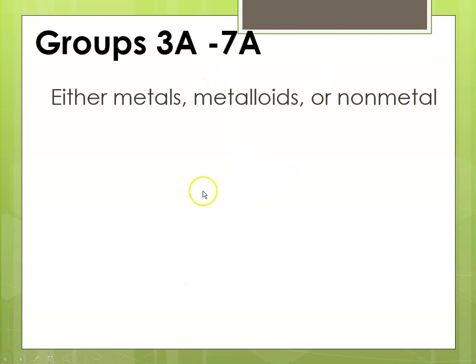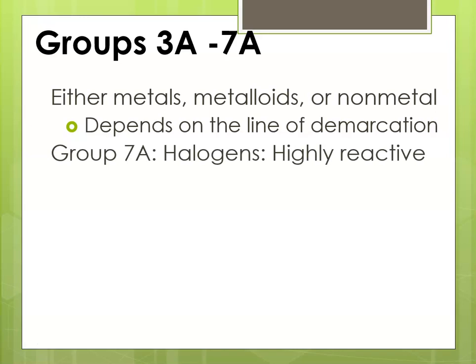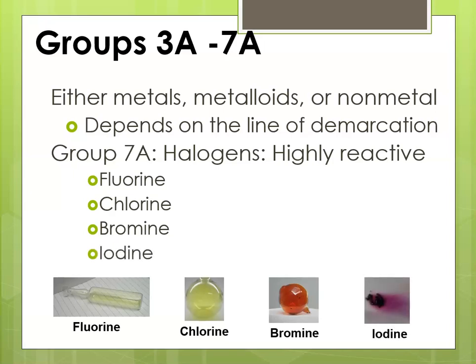Now groups 3A through 7A. We're talking about the representatives again, the tall guys on the periodic table. They are either going to be metals, metalloids, or nonmetals depending on where they are in relation to the line of demarcation. The group 7As are the so-called halogens and are highly reactive. Examples would be fluorine, which is probably the most reactive element on the periodic table and is a gas at room temperature. Chlorine, also a gas at room temperature and very reactive. Bromine, which goes from gas to liquid very readily. And then iodine, which is a solid at room temperature but sublimes, turning to a gas very readily.